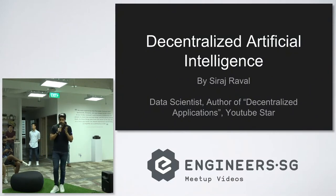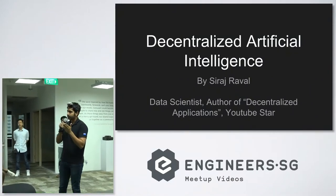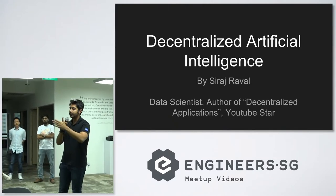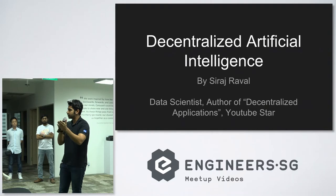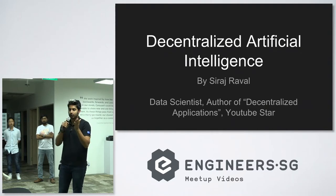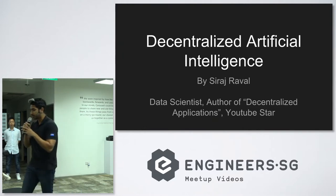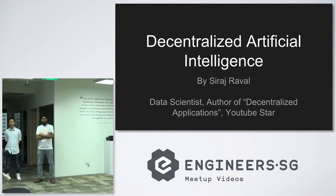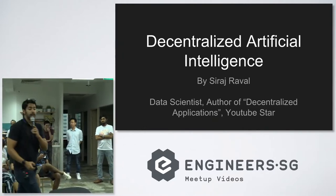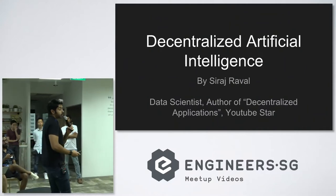So this talk is called Decentralized Artificial Intelligence. It's really combining two technologies that are very hot today: deep learning and blockchain. We know about these two technologies, right? Even if you're in data science, you study blockchain at some point. There are articles — it's hard not to look at this space with some level of interest. So we're going to talk about how to combine these two technologies together to make something beautiful.